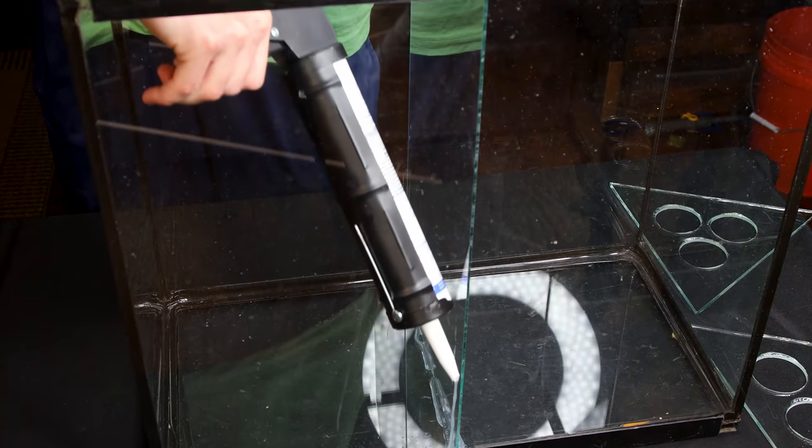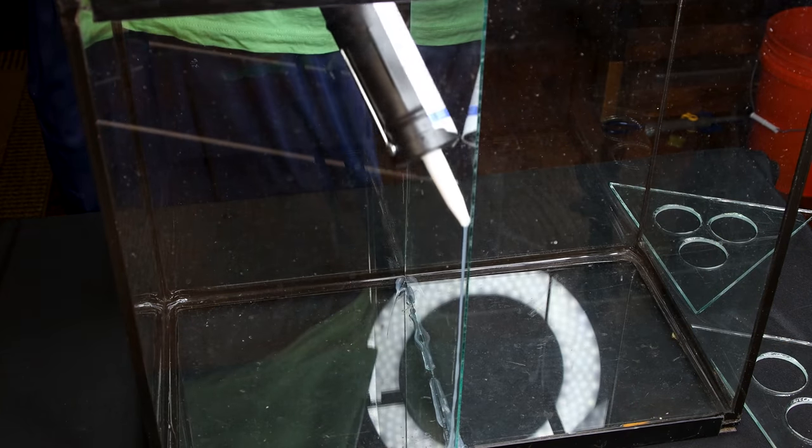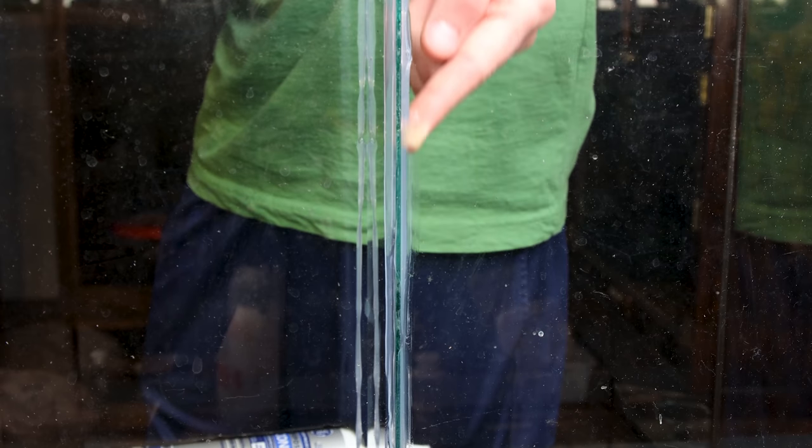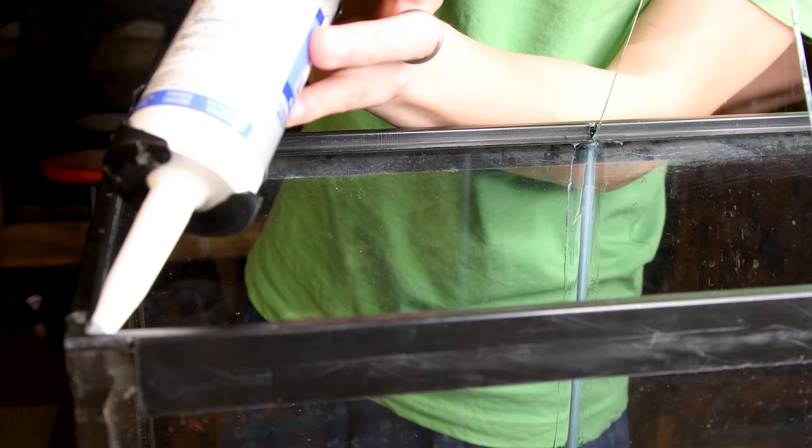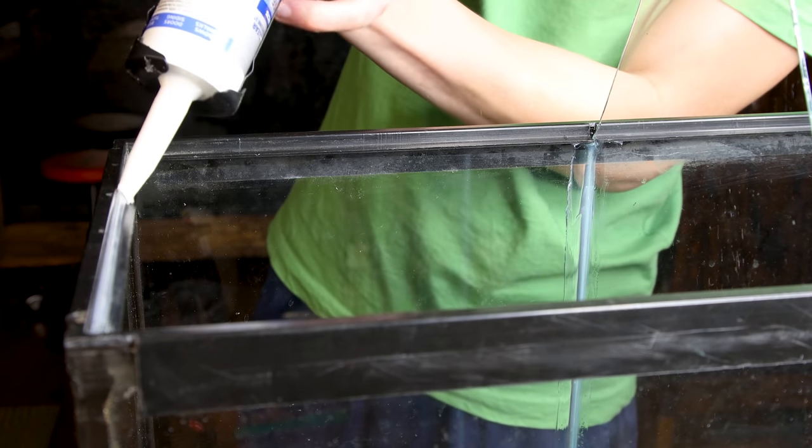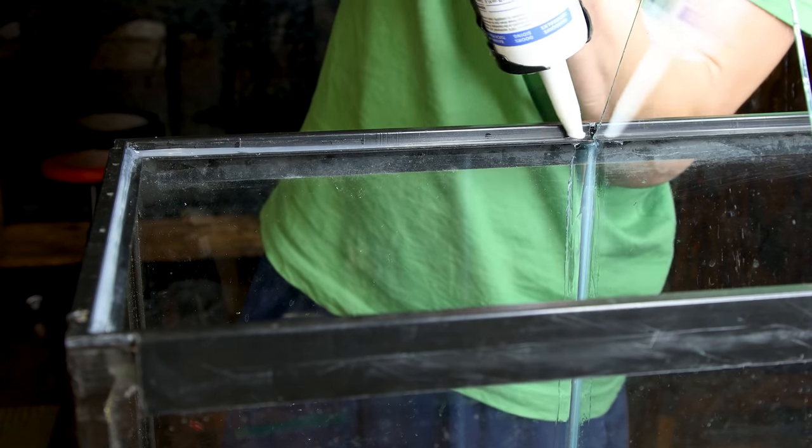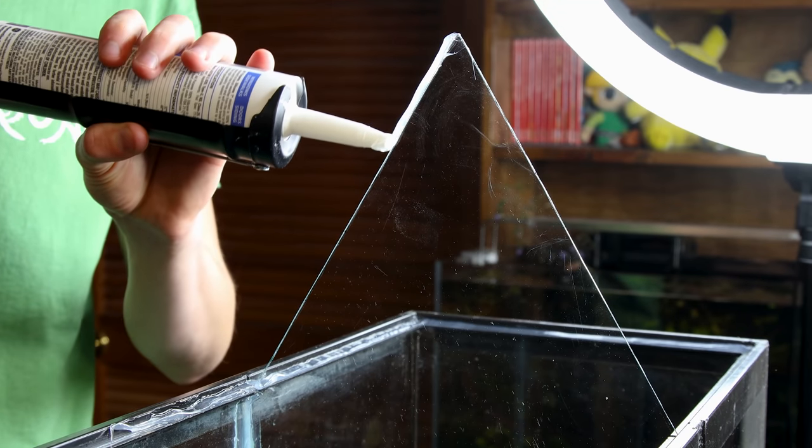I ran silicone beads along the sides of the glass. I went back and smoothed it out with my finger. I repeated this process with the other pieces. I ran silicone along the sides and back of the frame. I applied it to the back of the divider as well.